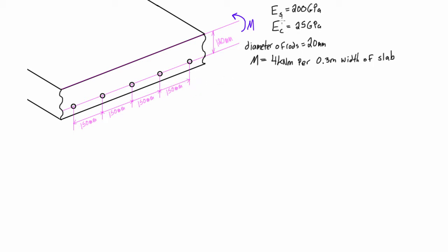We know ES, the modulus of elasticity of steel, and EC for concrete. We want to find our ratio n, which equals ES over EC. This is the same as in the previous videos — we want to transform the steel section into an equivalent area with modulus of elasticity equal to that of concrete. So 200 over 25 gives us n equals 8.